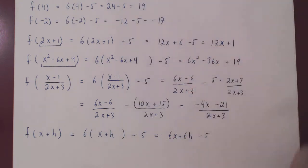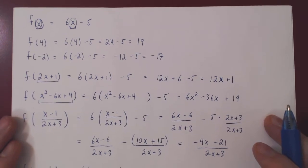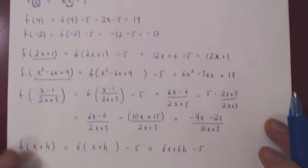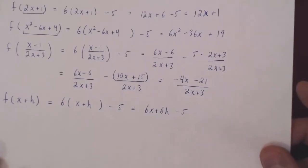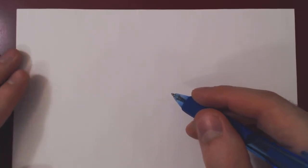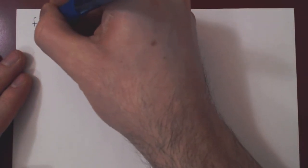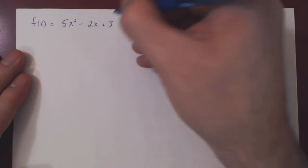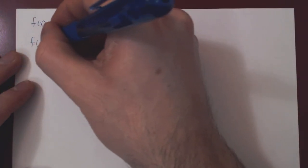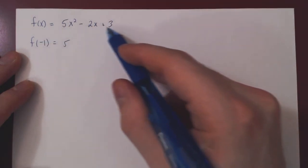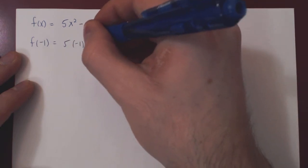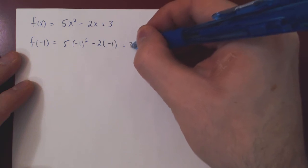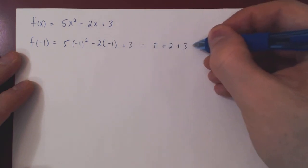Let's do a few more examples, now with a different function. This was rather a simple function — 6x minus 5 was a linear function. Let's use a quadratic function. What if we take f of x to be 5x squared minus 2x plus 3? We could take f of negative 1, now replacing x everywhere by negative 1. So 5 times negative 1 squared minus 2 times negative 1 plus 3, which gives us 5 plus 2 plus 3, which gives us 10.